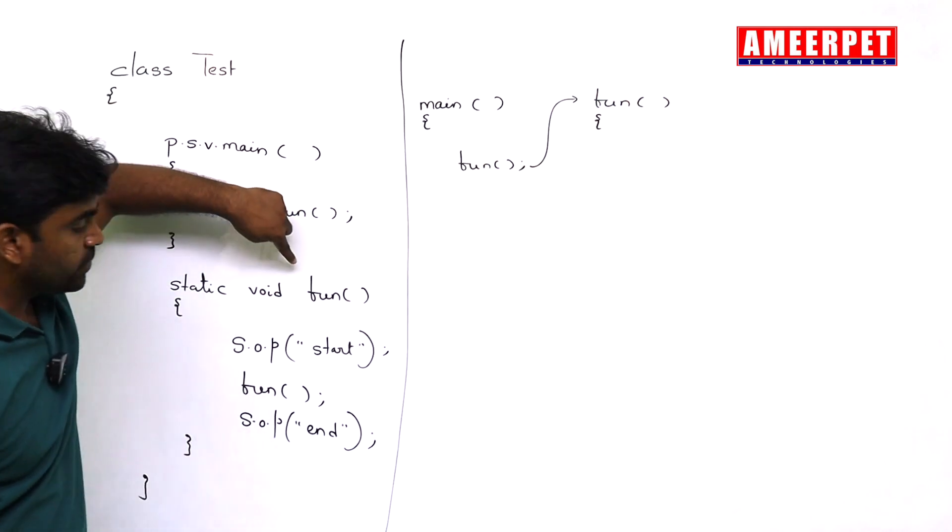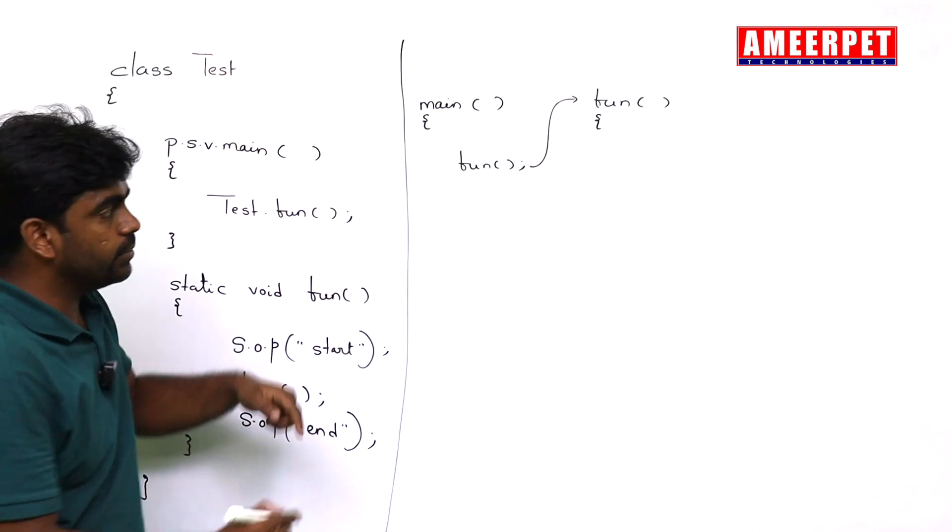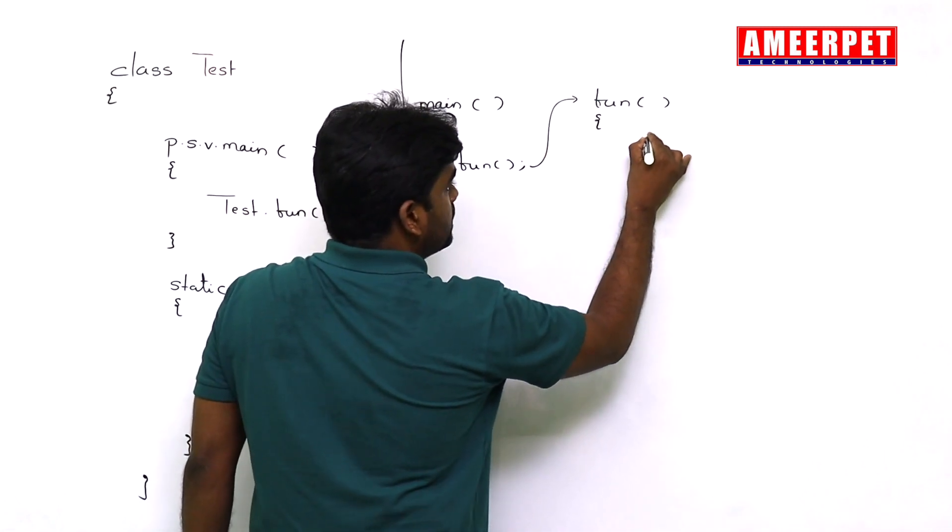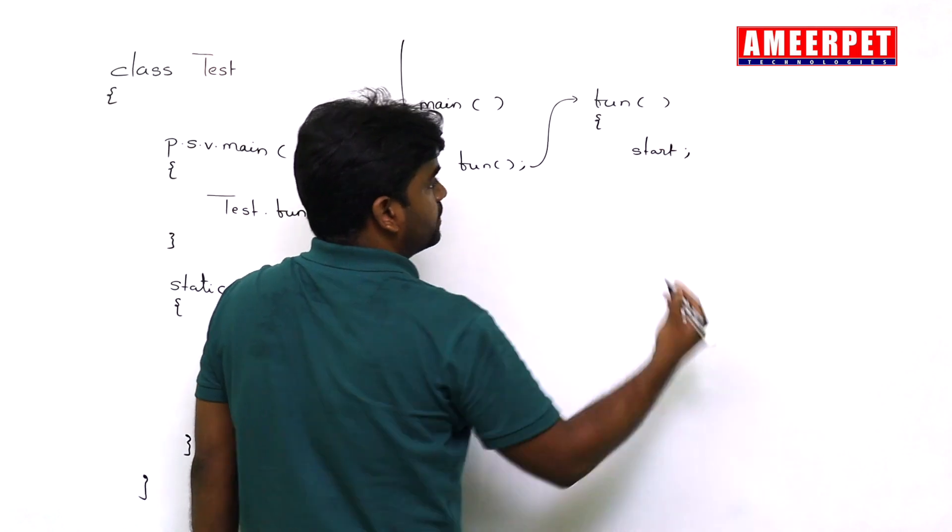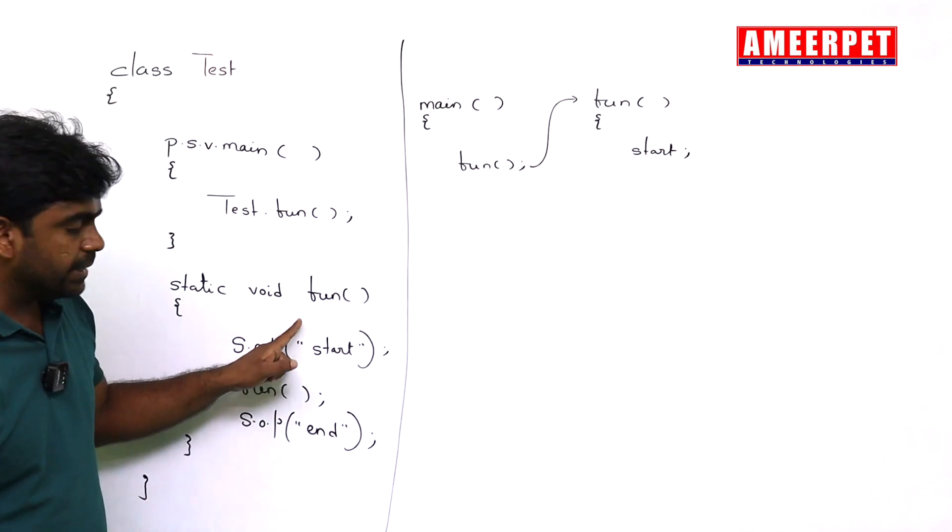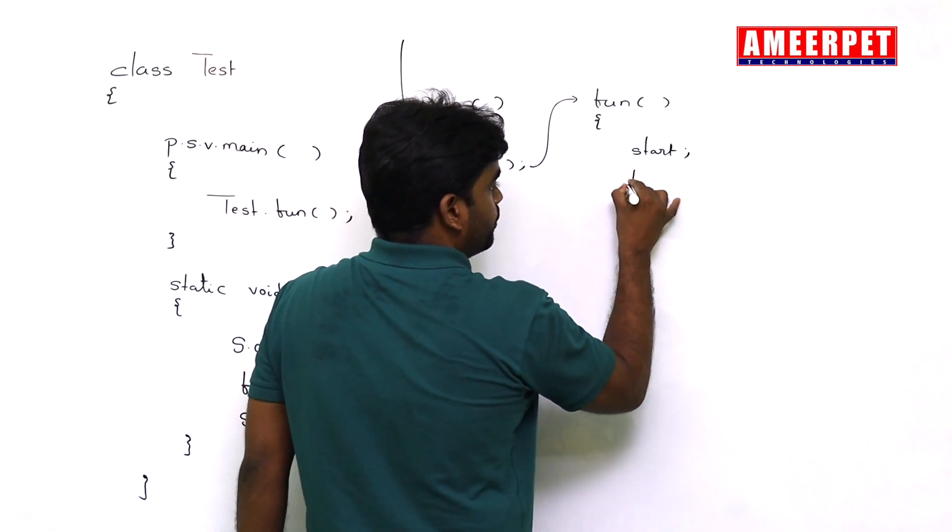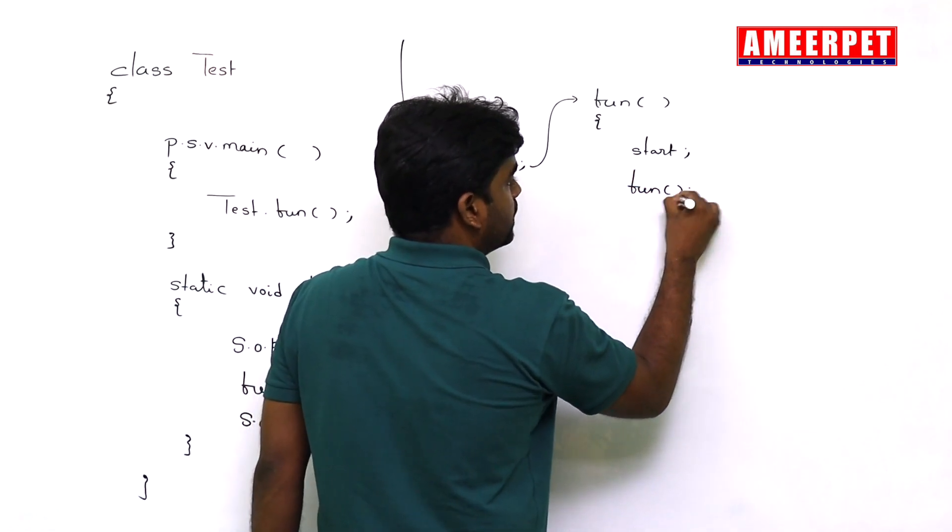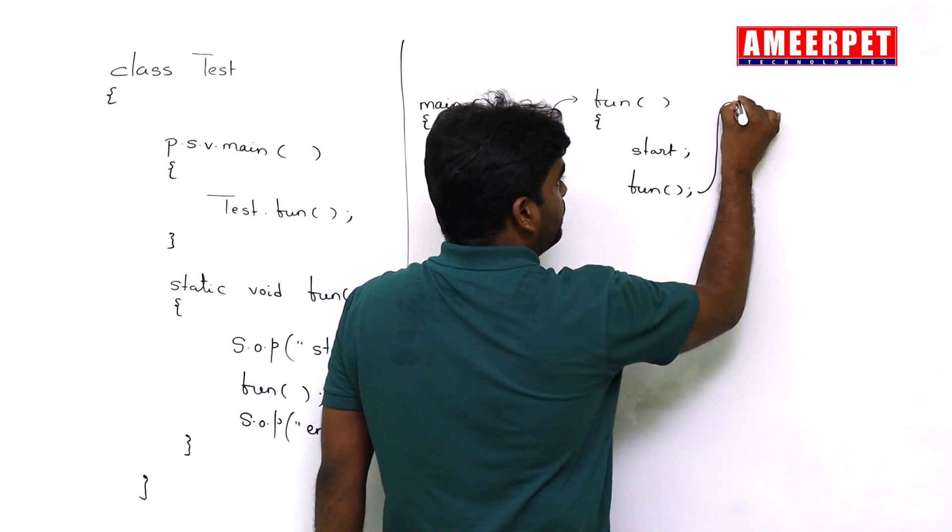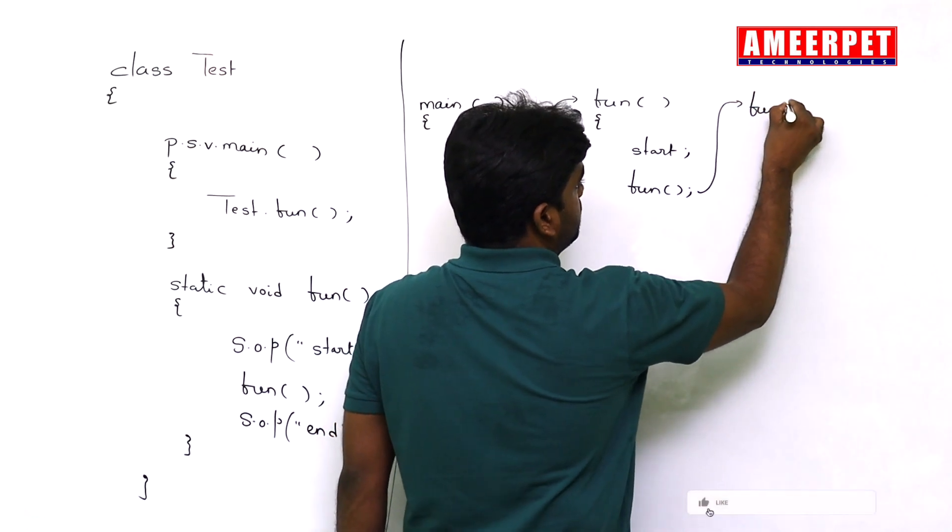Inside the fun method, the first statement execute is nothing but in output, start message will print. After printing this message, again we are calling this fun. Again we call this fun. So again memory will be allocated to this fun method.